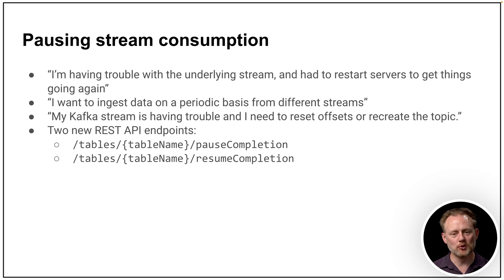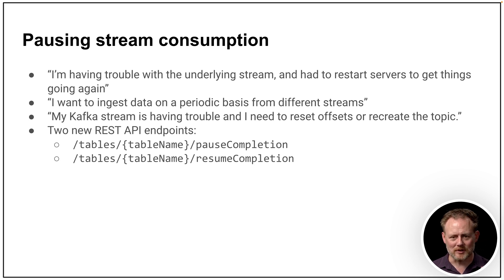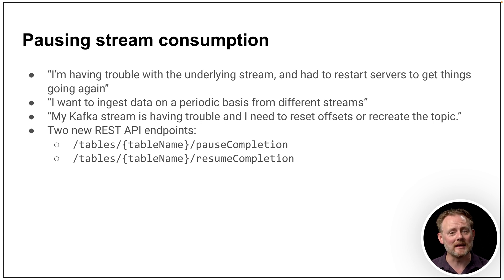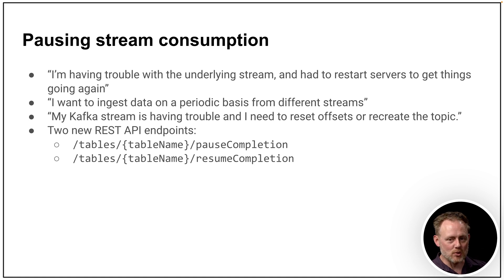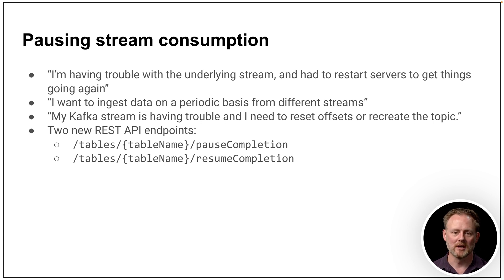You can now pause and resume stream consumption into a real-time table. Things go wrong — maybe you have to reset offsets in a Kafka topic because something broke, or destroy an old topic and create a new one. You can now instruct Pinot to pause consumption from that topic, go do your work in the source without getting errors during that time, and then resume consumption. It's a much more orderly way of repairing things in flight.